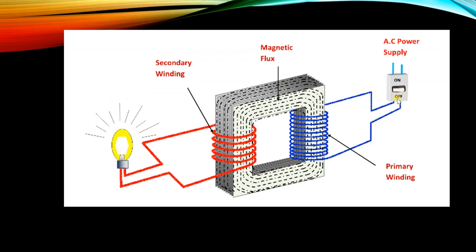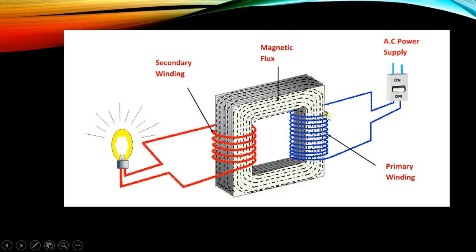On the primary side we have the AC supply, and because of this AC supply the electromagnetic current flows, which produces the magnetic flux. With a load connected on the secondary side, the bulb starts glowing, demonstrating the working of a transformer.